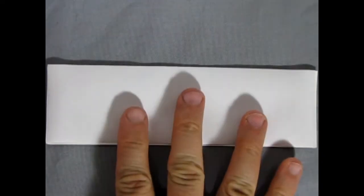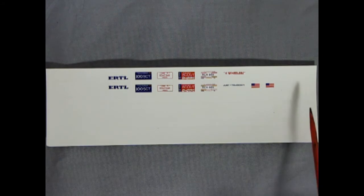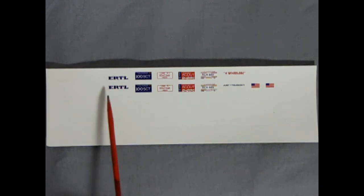Now we can reveal our decal sheet. And here it is. Now, you can't really see too much because these stripes are white, but they do say rally on them. Then we have an Ertel decal,